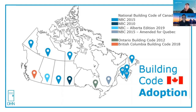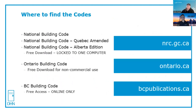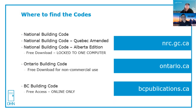So where do people find information about the codes? The codes, as they should be, are free to anyone that wants a copy. The National Building Code, including the Quebec edition and the Alberta edition, can be downloaded from the Canadian government website. The Ontario building code can be downloaded from the Ontario government site. The BC building code can't be downloaded — it is an online-only resource available from the BC provincial website. The downloadable codes are locked to a single computer, so whoever wants a copy will have to download their own copy.